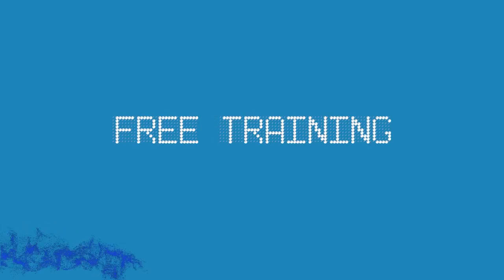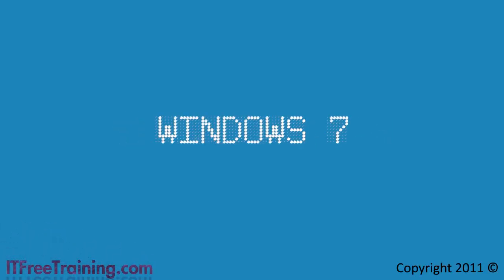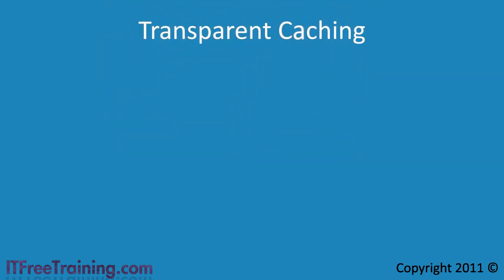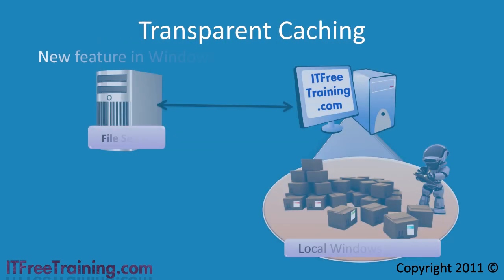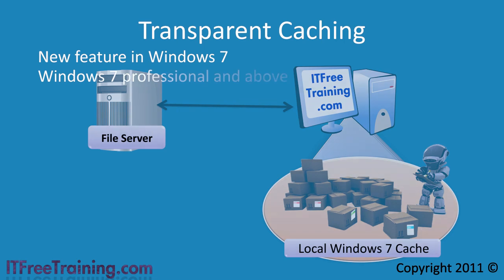Welcome back to your free training course for Windows 7. In this video I will look at transparent caching. Transparent caching is a new feature in Windows 7 which can help speed up file access on your networks. To use transparent caching you require Windows 7 Professional or above.